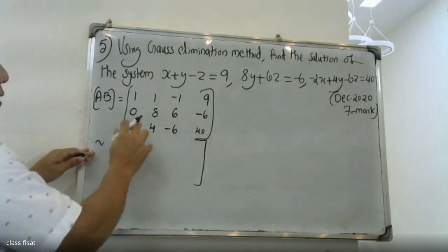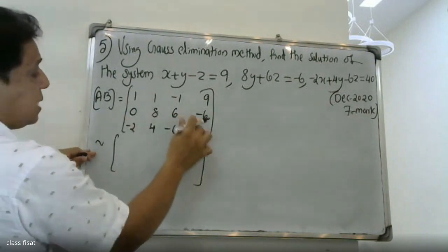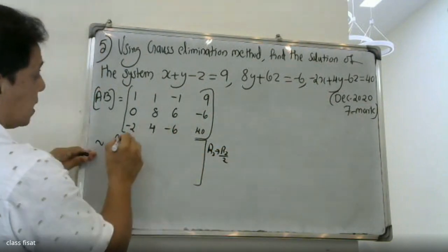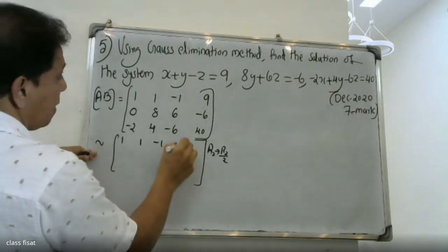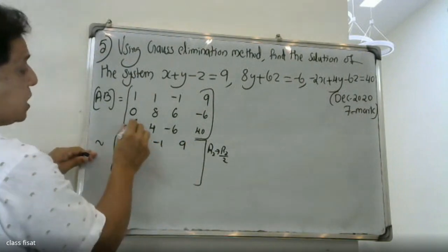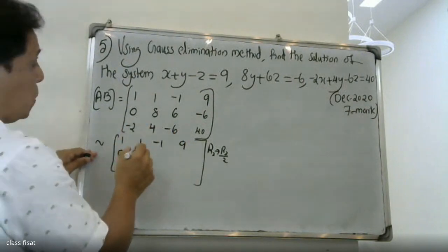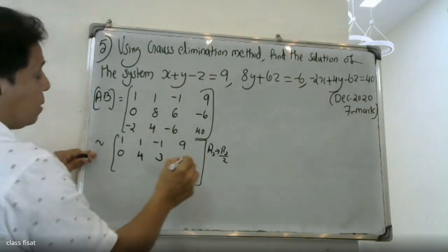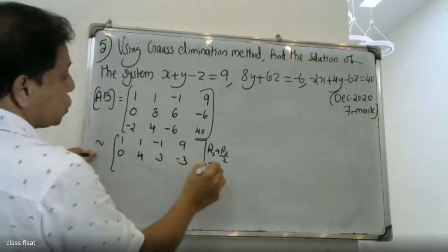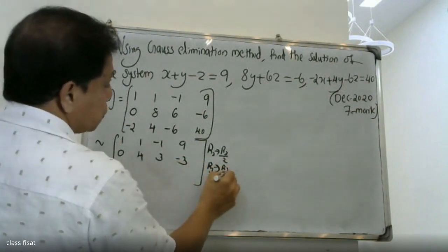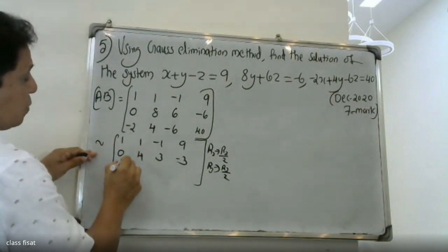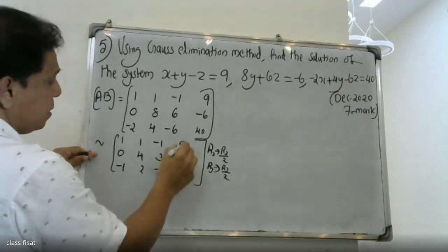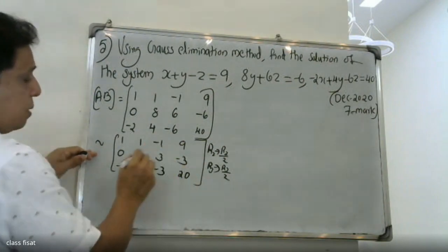We change R2 by 2. Row 1: 1, 1, minus 1, 9. Second row: 0, second entry. R3 changes to R3 by 2. Then: minus 2, minus 1, then 4, then 2, minus 6, minus 3, then 4, then 2.